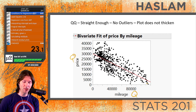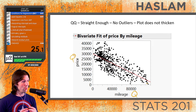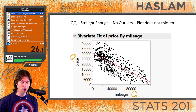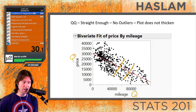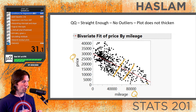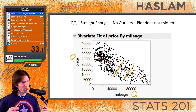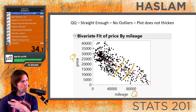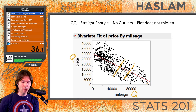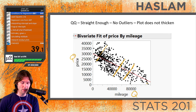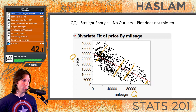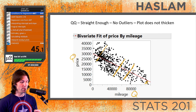Straight enough means that the line is generally going through the center of the data. You'll notice the line is going right through the middle — imagine it like a bar of gold or a slice of pizza slicing through evenly on both sides. There might be a slight issue here where points are lower on one side, but overall this is straight enough.